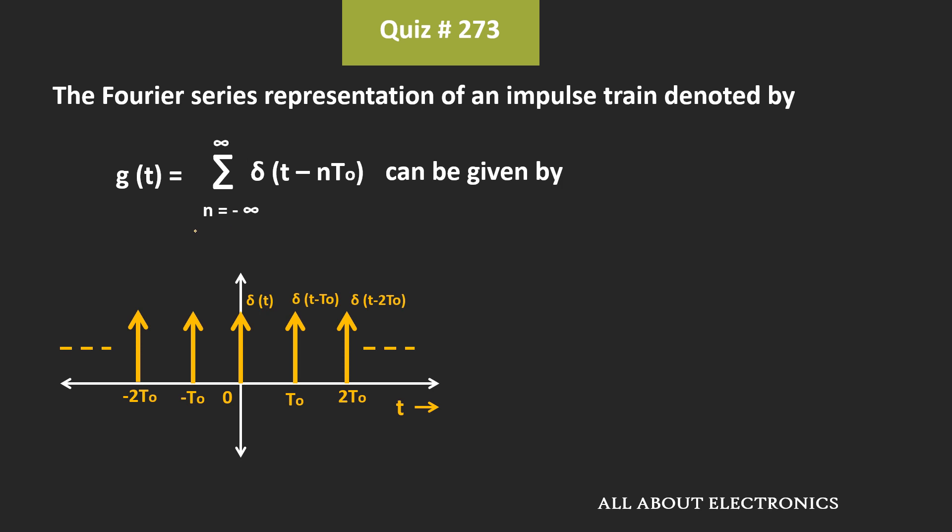So in this expression, when we put the value of n equals 0, then we get the unit impulse function at time t equals 0. Similarly, when we put the value of n equals 1, then we get the time-shifted unit impulse signal at t equals t0.